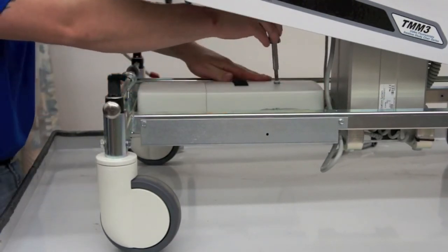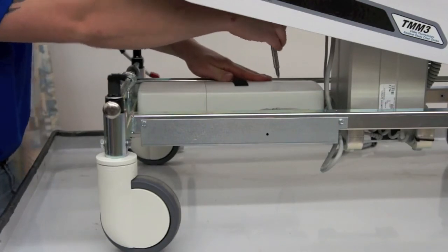Using your flat head screwdriver, push down on the cover and turn the screw to the locking position.